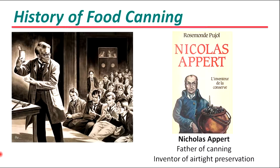Canning process was introduced about two centuries ago and for a long time it has been one of the main means of food preservation, together with chilling and freezing. The food canning history began in the late 18th century in France when Nicholas Appert discovered that the application of heat to food in a sealed glass container prevented food spoilage.